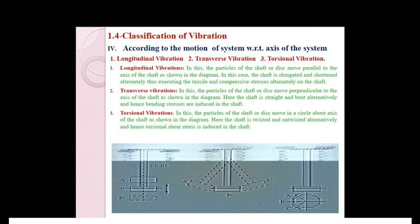In transverse vibration, the particles of the shaft or disc move perpendicular to the axis of the shaft. The shaft is straight and bent alternately, and hence bending stresses are induced. The third type of motion observed in most machine components is twisting and untwisting motion, and those oscillations are explained as torsional vibrations.